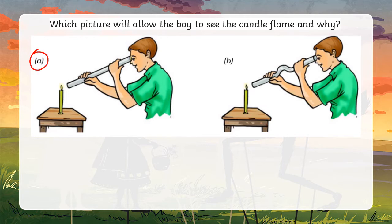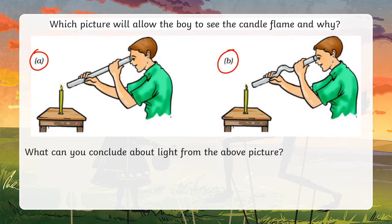We know that the boy in picture A will be able to see the candle flame. Why? Because he has a straight tube. And what does it conclude about light from the given picture?